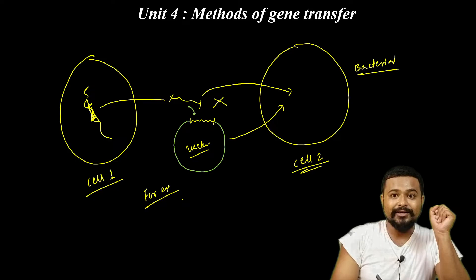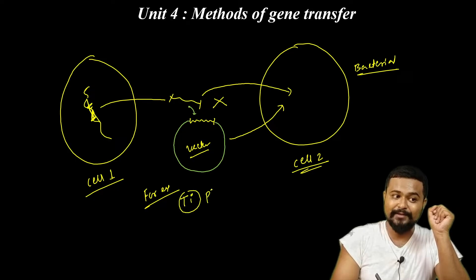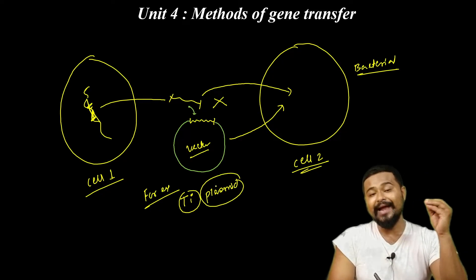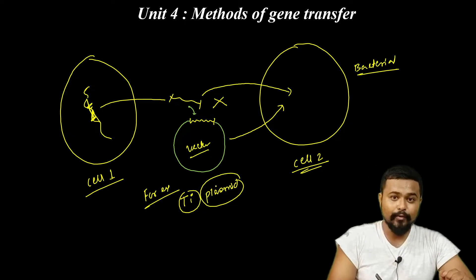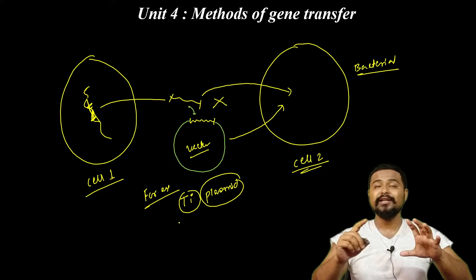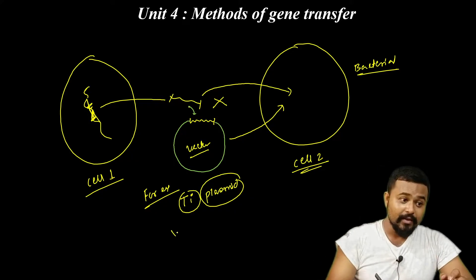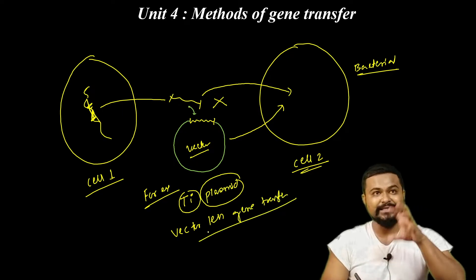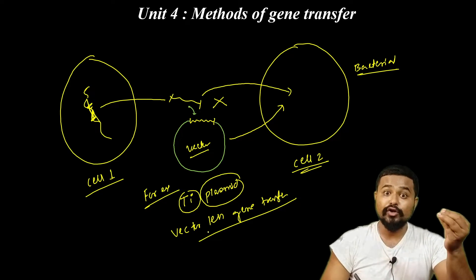Agrobacterium tumefaciens means Ti plasmid. This Ti plasmid will directly transfer the genes to the bacteria. Plus, there are certain vectorless gene transfers — it means that you don't have a vector.